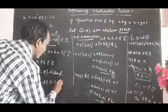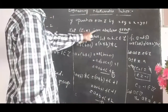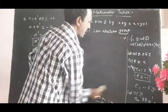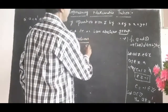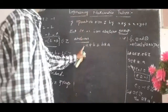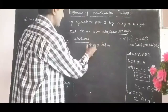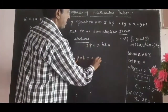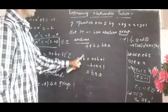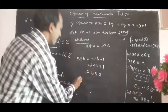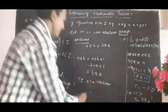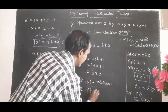Now for the second part, we prove Z comma star is abelian. Abelian means a star b equals b star a for all a, b in Z. We have a star b equals a plus b plus 1, which is nothing but b plus a plus 1, which equals b star a. Therefore a star b equals b star a, and so Z comma star is an abelian group.